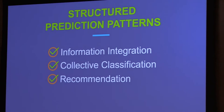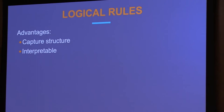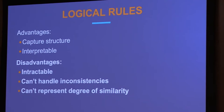What I really like is doing all of these at the same time — not just one pattern but information integration, inferring missing information, and recommendations all mixed together at scale, handling all the uncertainty. Now, logical rules have well-known disadvantages: reasoning with them is intractable, any inconsistency breaks things down, and representing similarities in logic is challenging. I want to get to some ways of overcoming these.